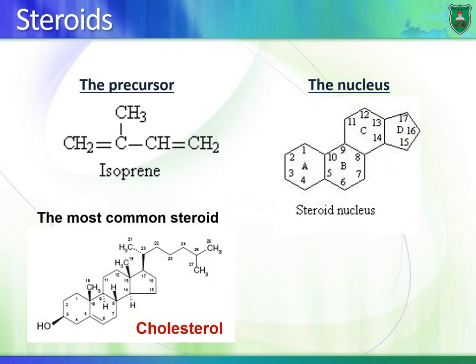The type of lipids we will be talking about are steroids. Steroids are the cyclic lipids. They are composed of a steroid nucleus, which is made of 4 ring structures and a total of 17 carbons. This nucleus is derived from a molecule known as isoprene.